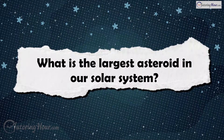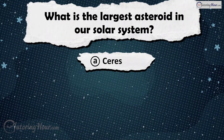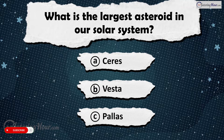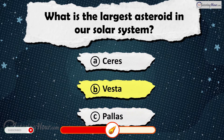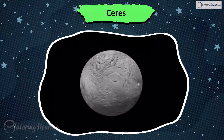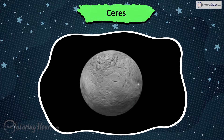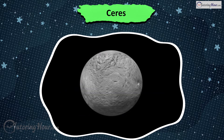What is the largest asteroid in our solar system? Is it A) Ceres, B) Vesta, or C) Pallas? The answer is Ceres. Ceres is the largest asteroid and is classified as a dwarf planet due to its size and spherical shape.